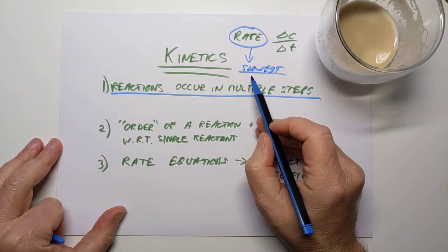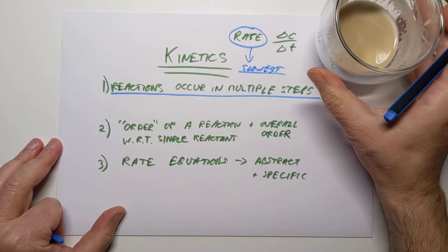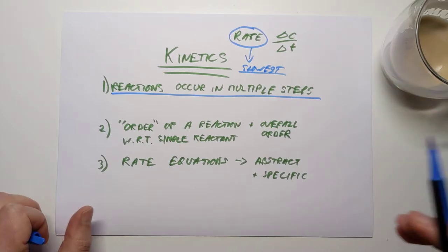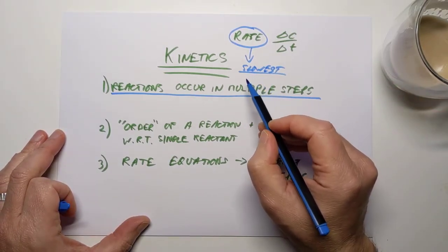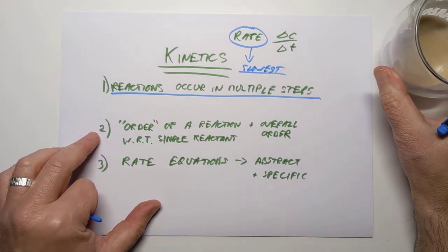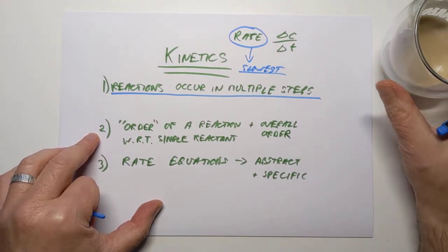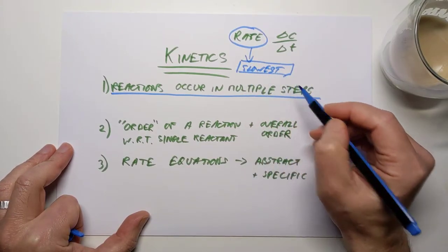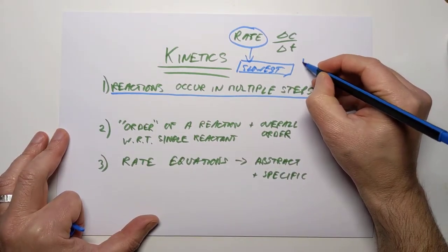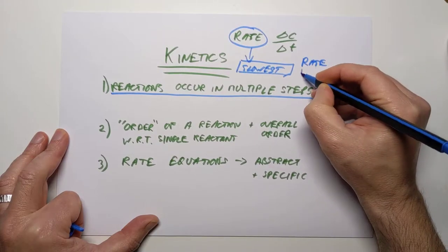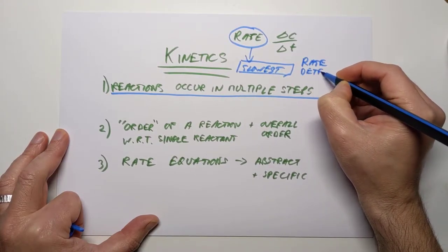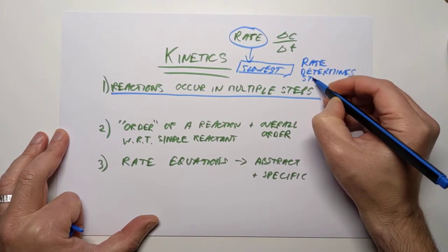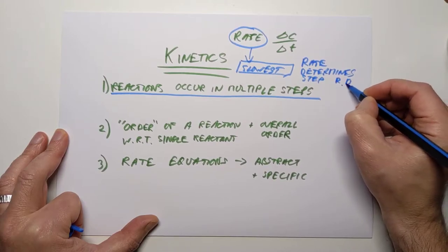The overall rate will be held up by the slowest step — it must be held up by the slowest step. The other two steps are standing there tapping their fingers, waiting. There is no way to tell where the slowest step occurs, but we can work out which chemicals are involved in the slowest step. We give it the name the rate-determining step, or RDS — the step that determines the overall rate of the reaction.